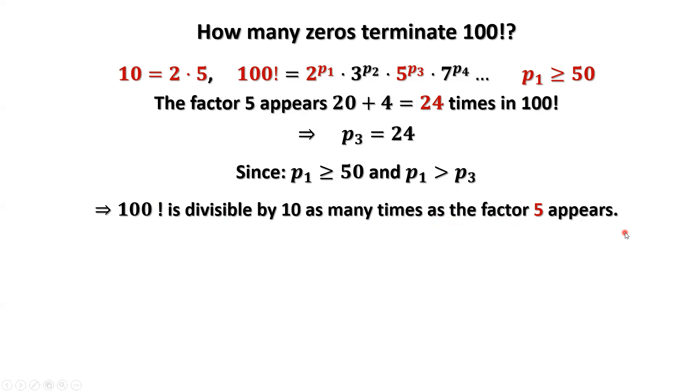Why? Totally, we only have 24 factors of 5. We only need 24 factors of 2. Here we have more than 24 of factor 2.